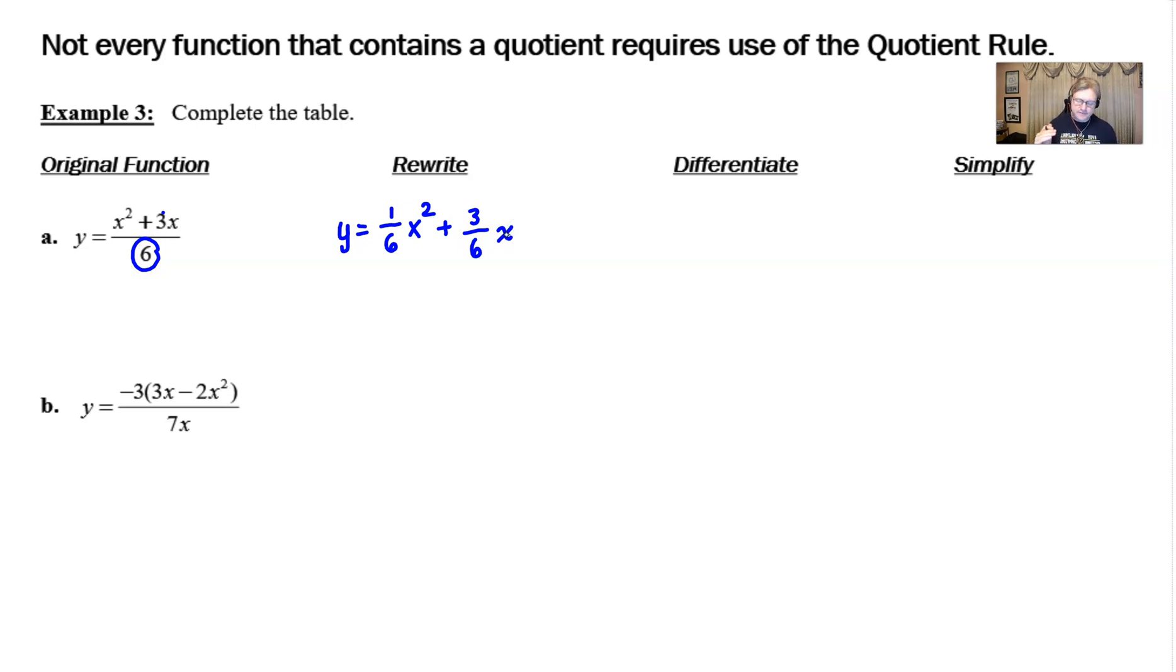The derivative would end up being, well, the two comes out in front. We multiply by the constant that's there, one-sixth, and then the power rule says that you're going to take one away from the exponent.